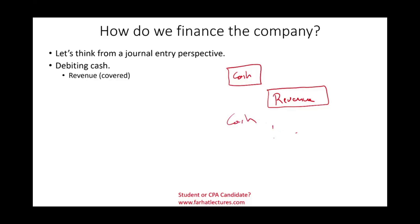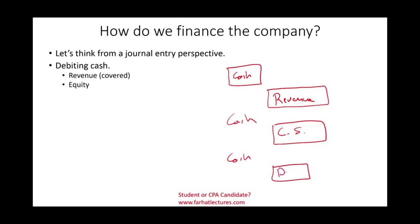When I debit cash, I can credit common stock or equity — that's another source of cash when the company issues stocks and sells equity to the public. The third source: I debit cash and credit some sort of debt — it could be loans or bonds. These are the three forms of financing: revenue, equity, and debt. Every time those accounts are credited, cash is debited.